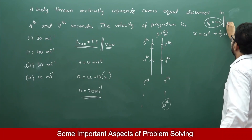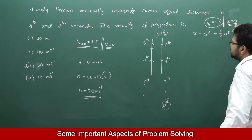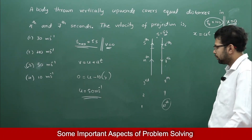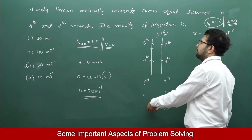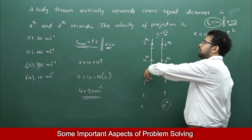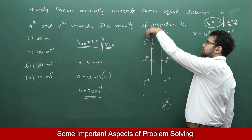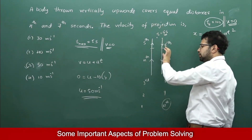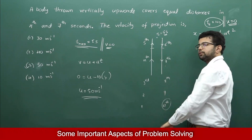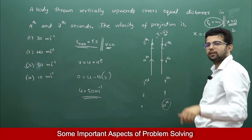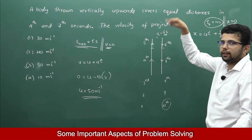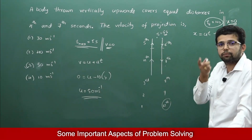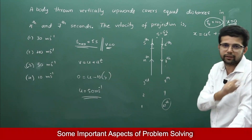In 10 seconds, what is the displacement of the object? The displacement is 0, because the ball was thrown from a point, reached maximum height at t = 5 seconds, and returns to the original position at t = 10 seconds since it is thrown vertically upwards. So displacement is 0 in 10 seconds.